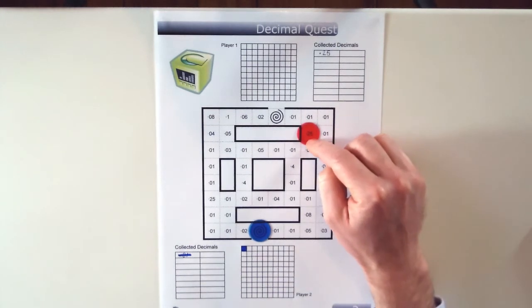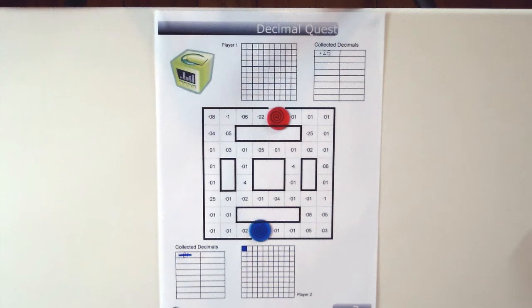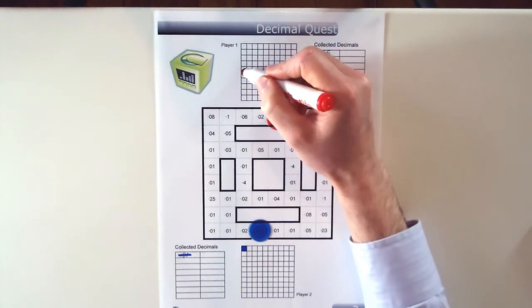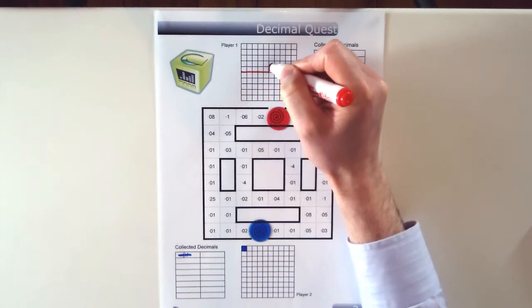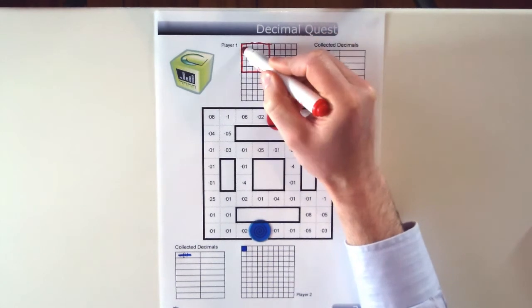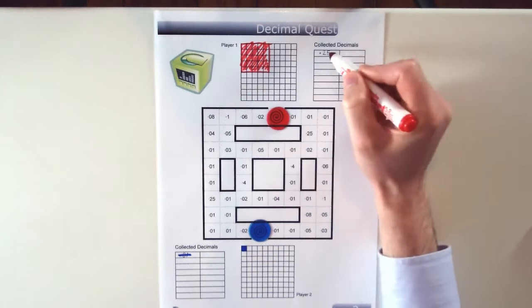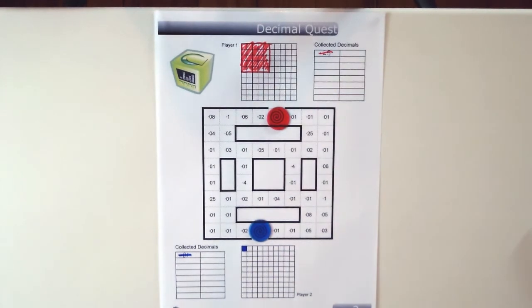And red's going to do the same, 1, 2, 3. They collected 0.25 which of course is also a quarter. So they divide this up into a quarter and color in their 0.25. I'll just do it quickly like that. And they also cross it out from where they've collected it.